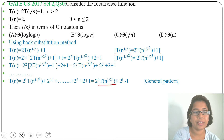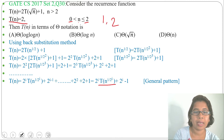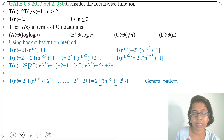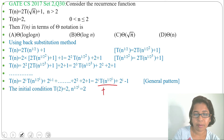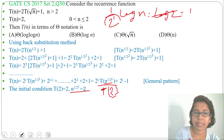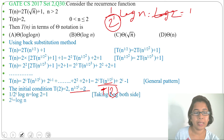Next we need to compare this with the initial condition: T(n) = 2 for 0 < n ≤ 2. So we set T(n^(1/2^i)) equal to T(2), meaning n^(1/2^i) = 2. Taking logarithm on both sides: (1/2^i)·log n = log 2 = 1. Taking 2^i to the right side gives 2^i = log n.